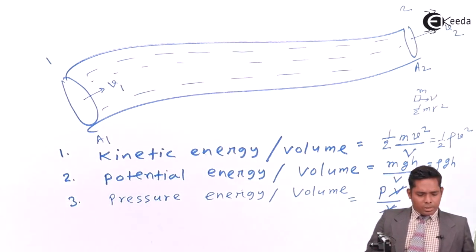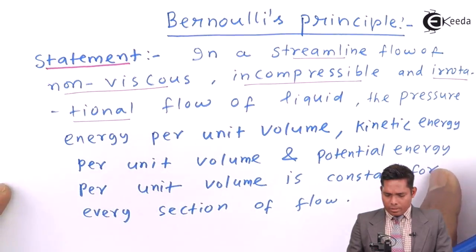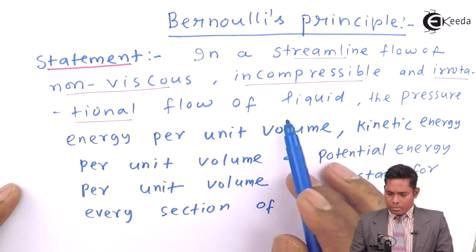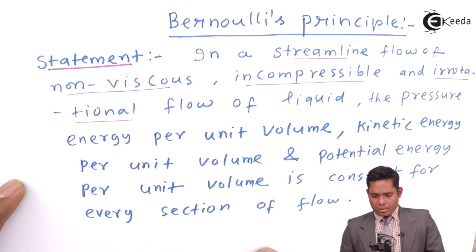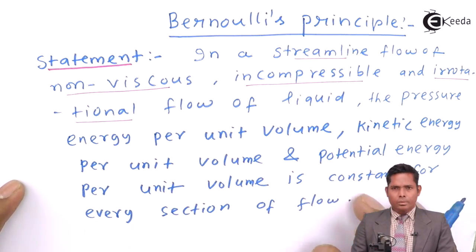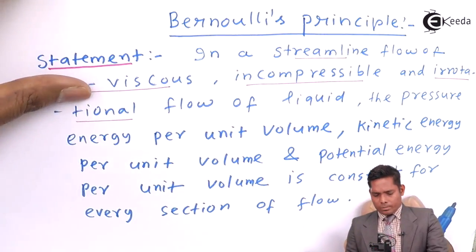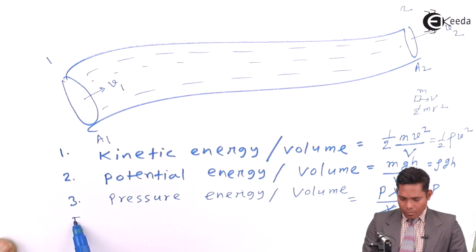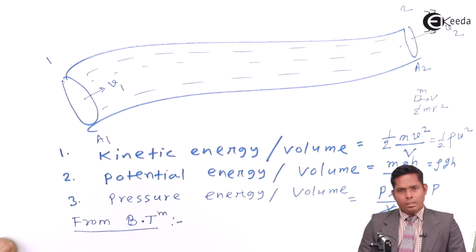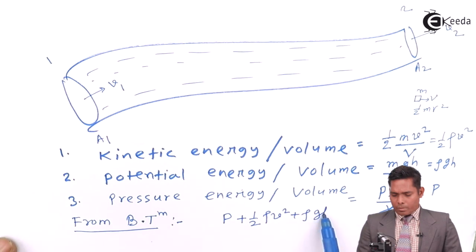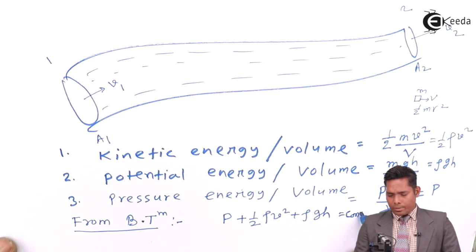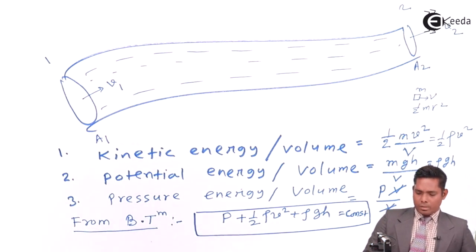So from Bernoulli's theorem, we can write that pressure energy per volume plus kinetic energy per volume plus potential energy per volume is constant. That is: P + ½ρv² + ρgh = constant. This is known as Bernoulli's theorem.